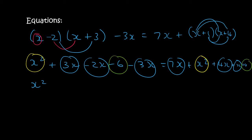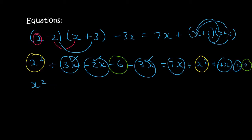Let's do everything on the left first. So x squared, then 3x minus 2x is 1x, minus another 3x gives minus 2x — so there shouldn't be a plus there. That's minus 2x, then minus 6. On the right we have 7 plus 4 is 11, plus 1 is 12x, plus x squared, plus 4.